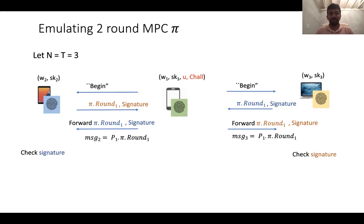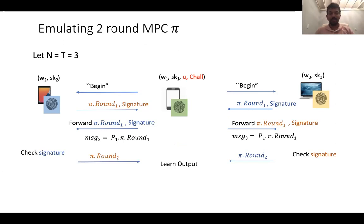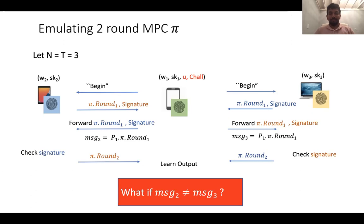The parties check the signature. Additionally, P1 sends its own first round of the underlying MPC protocol to both parties. They respond back with their respective second round messages. Notice that since we want only P1 to get the output, it need not actually even generate its own second round message. It can just use the transcript of the protocol so far to compute the output of MPC. Unfortunately, we also need to ensure that P1 does not send inconsistent first round messages to both parties. Notice that this underlying two-round MPC protocol, if it's based in the broadcast channel setting, requires that the first round message sent by P1 to all the parties is the same.